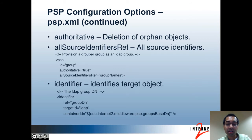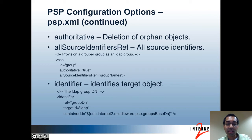There's an attribute in the PSO element called authoritative, which determines whether objects that don't exist in Grouper should be deleted from the target. In most cases you probably want this to be true, so that if a group or folder is deleted from Grouper it would also be deleted from the target. There's the all source identifiers ref, which refers to the attribute resolver to get all source identifiers for that type of object — for groups, this should return the group names for all groups that should be provisioned to the target. Next, there are identifiers which identify target objects. Identifiers consist of a string ID, a target ID, and possibly a container ID. The group DN references the attribute resolver to return the LDAP DN of the group.